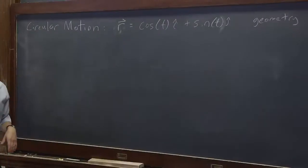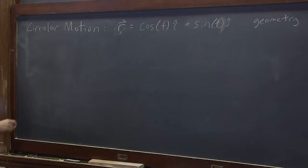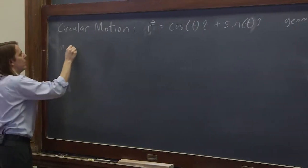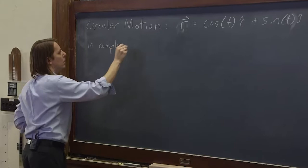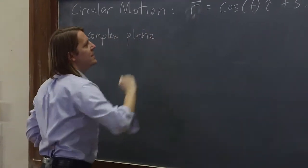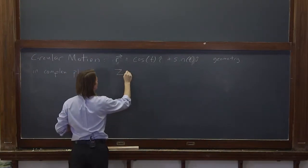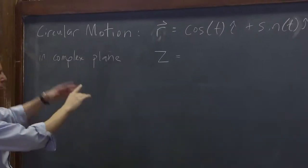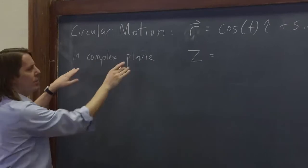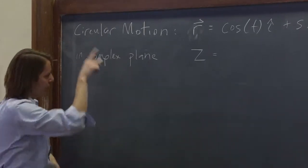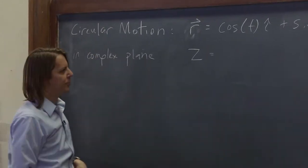But now let's describe it in the complex plane. So that number z we talked about before had a real and an imaginary part. That makes it a complex number, and that plane with a real and imaginary axis is called the complex plane.